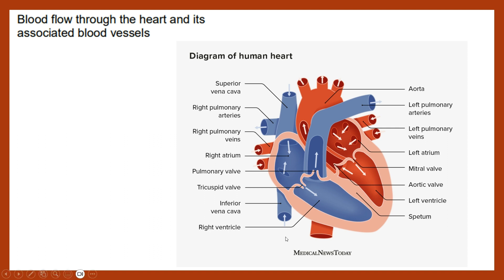Blood will return from the body tissues via the vena cava into the right atrium. At the same time, blood will be returning from the lungs via the pulmonary veins into the left atrium — so both of these chambers will fill at the same time.